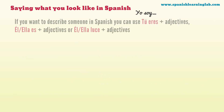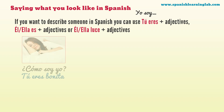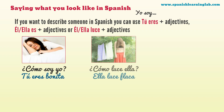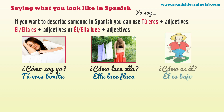If you want to describe someone in Spanish, you can use tú eres plus adjectives, él es or ella es plus adjectives, or él luce, ella luce plus adjectives. For example: ¿Cómo soy yo? Tú eres bonita. ¿Cómo luce ella? Ella luce flaca.